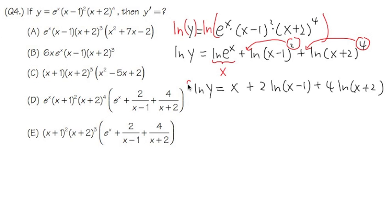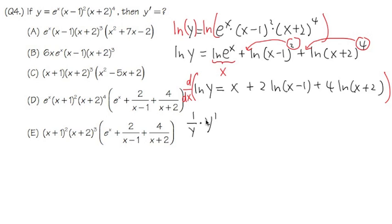I'll write d/dx with a large parenthesis to symbolically indicate we're taking the derivative. The derivative of ln y is going to be 1 over y, but because y is a function of x, we need to multiply by y prime. That y prime is exactly what we are looking for. The derivative of x with respect to x equals 1.